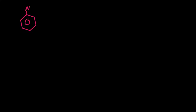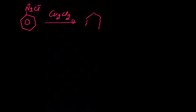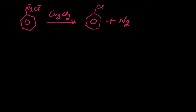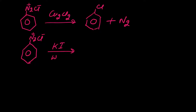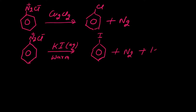Benzene diazonium chloride को starting material लेंगे haloarene formation के लिए। Benzene diazonium chloride (C6H5-N2Cl) का reaction अगर हम cuprous chloride Cu2Cl2 के साथ करते हैं तो chlorobenzene बनता है और N2 निकल जाता है। अगर cuprous bromide (CuBr) लेंगे तो bromobenzene बनेगा। यह reaction — Cu2Cl2 के साथ — Sandmeyer reaction कहलाता है। यह एक important name reaction है।